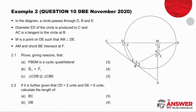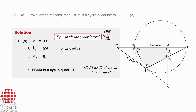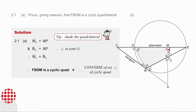Example number two. Again, look at the critical words in this example, pause the video and try it yourself, then we'll do it together. The first question asks you to prove that FBDM is a cyclic quadrilateral. You've been given that angle M2 is 90 degrees. DE is a diameter, which means angle DBE is also 90 degrees. So angle M2 equals angle B2, which means FBDM is a cyclic quadrilateral because of converse of exterior angle of a cyclic quadrilateral. Notice again — I've used cyclic in my reason, which means I must have the word converse in that reason as well.